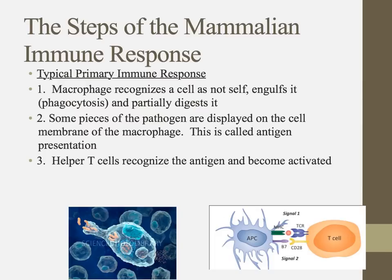In a typical primary immune response — meaning encountering a pathogen for the very first time — macrophages encounter a cell, recognize it as not-self, and engulf it via phagocytosis. Inside the macrophage are lysosomes filled with enzymes that partially digest those pathogens. Then the macrophage does something strange: it takes that partially digested pathogen and displays pieces of it on its cell membrane. This is antigen presentation — like a true Hannibal Lecter move.